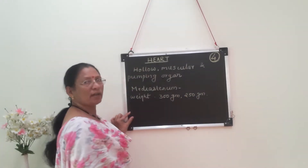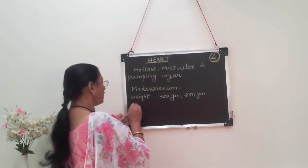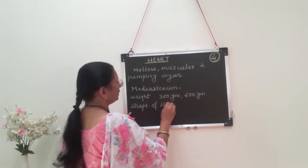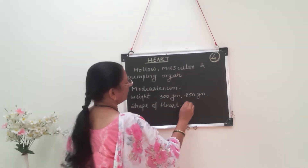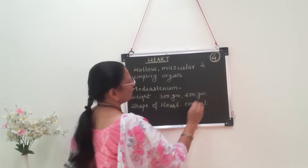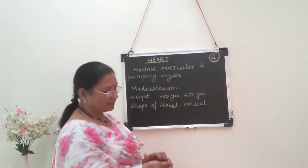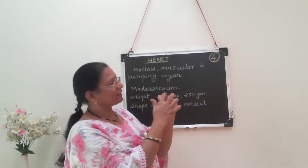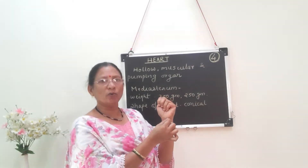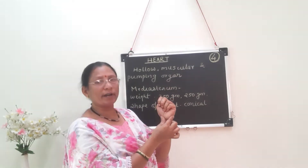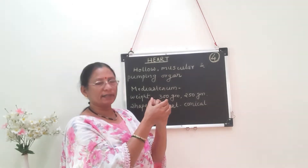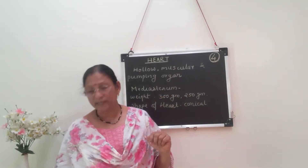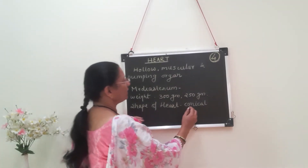What is the shape of the heart? The shape of the heart is conical. The heart is like a fist-like structure, which is broader at the upper end and conical, or narrow, at the lower end. So the shape of the heart is conical.